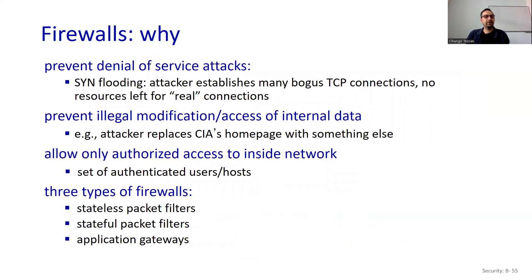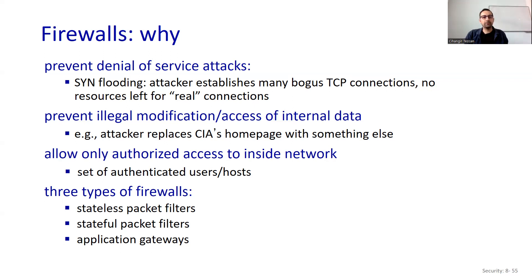There are many reasons. We can prevent denial-of-service attacks like SYN flooding, where an attacker establishes many bogus TCP connections, leaving no resources for real connections. We can also prevent illegal modification or access of internal data — for example, an attacker replacing the CIA's homepage. Firewalls allow only authorized access to the inside network for a set of authenticated users or hosts.